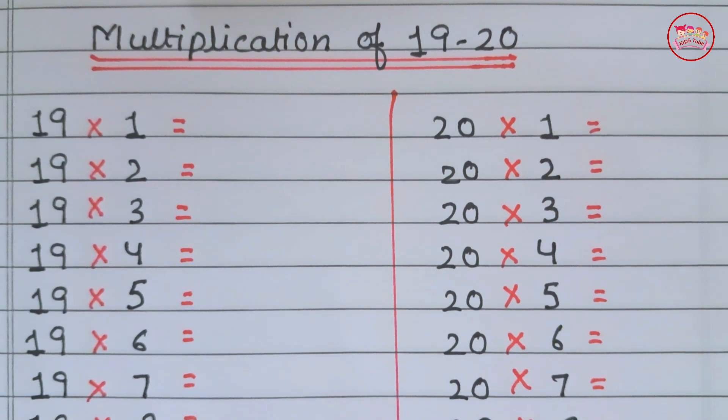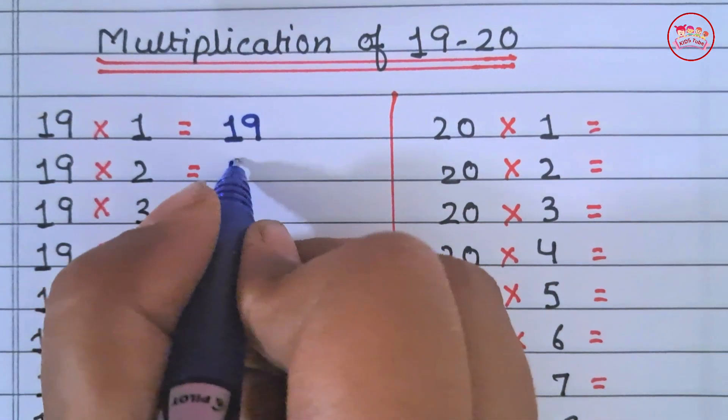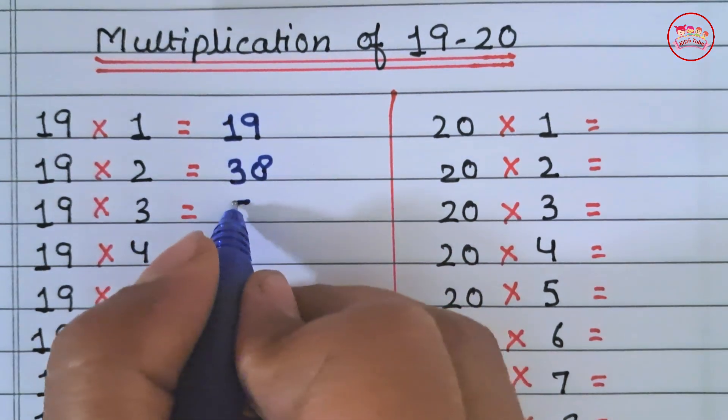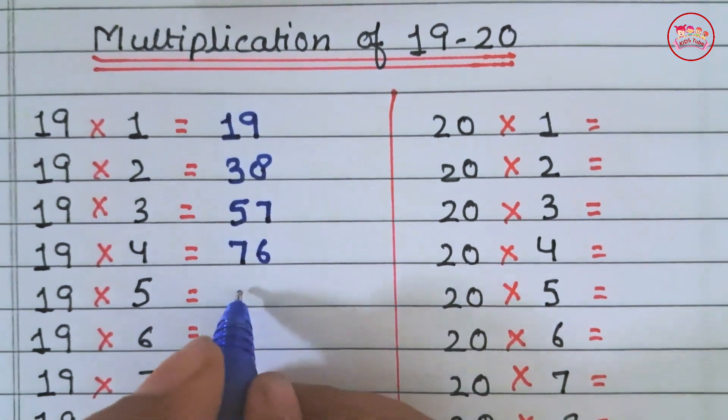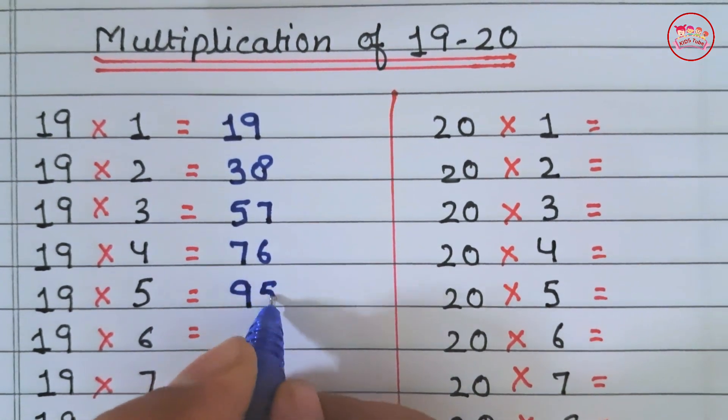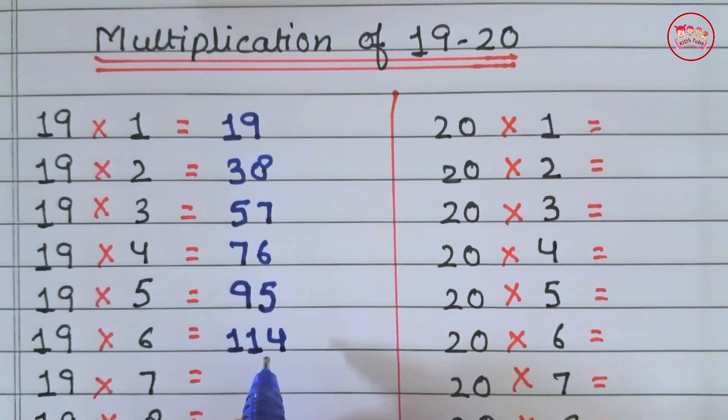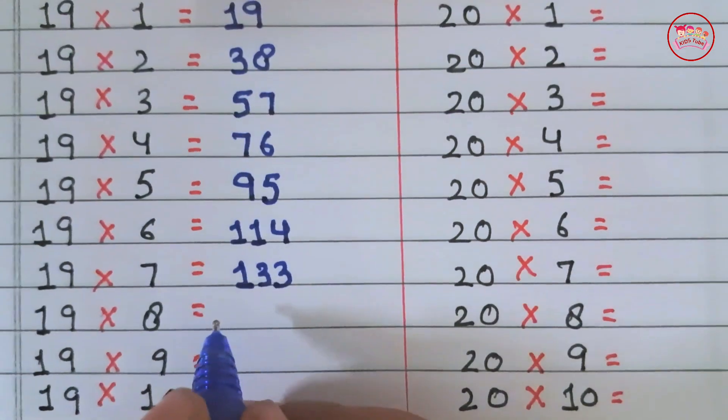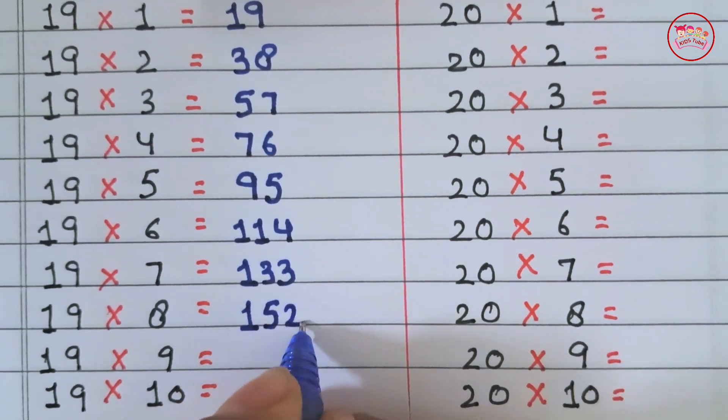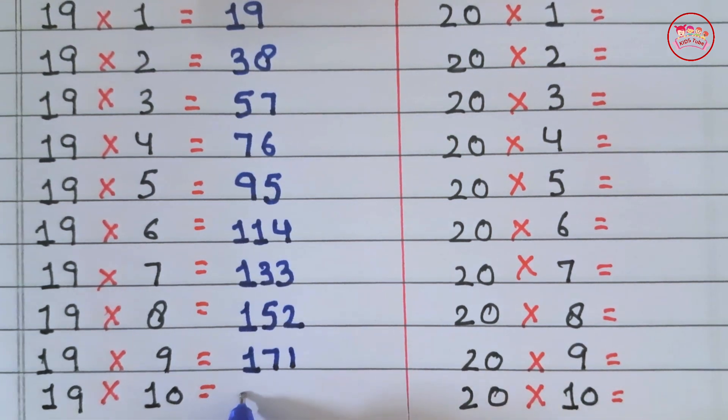Multiplication of 19 and 20. 19×1 is 19, 19×2 is 38, 19×3 is 57, 19×4 is 76, 19×5 is 95, 19×6 is 114, 19×7 is 133, 19×8 is 152, 19×9 is 171, 19×10 is 190.